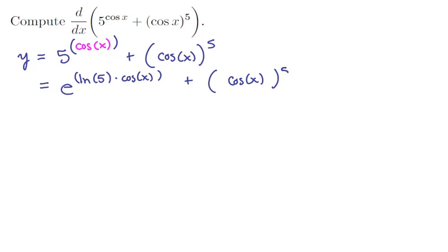And the other term we'll just copy down here. We've got cos x quantity to the 5th power. Now notice that inside each one of these expressions, we've got a lot of stuff in parentheses. So that derivative is going to involve a lot of the chain rule. So let's do that right now.